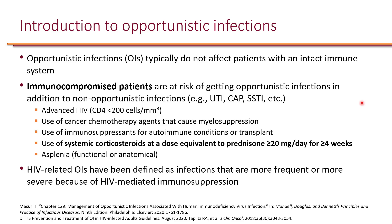Which patients are considered immunocompromised? In general: advanced HIV, meaning a CD4 cell count of less than 200; cancer patients receiving chemotherapy that causes myelosuppression including neutropenia; and those who receive immunosuppressant therapy for either autoimmune conditions or transplant.